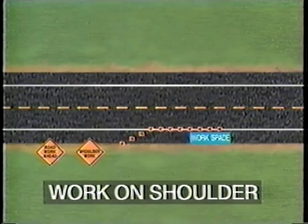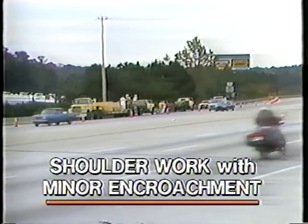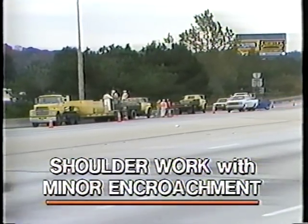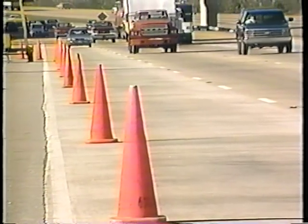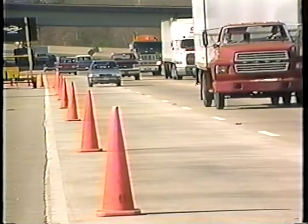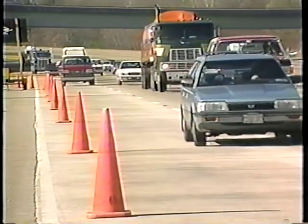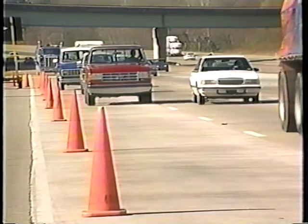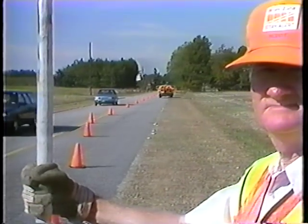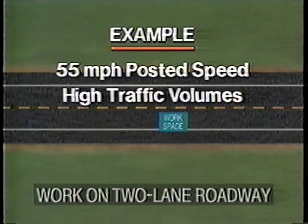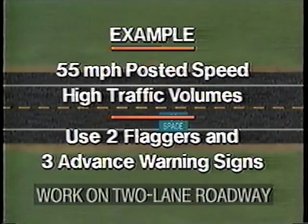A buffer space should be provided in advance of the work space. When work is on the shoulder or takes up part of a lane, traffic volumes, types of traffic (buses, trucks, and cars), speed, and capacity should be analyzed to determine whether the affected lane should be closed. The lane should not be reduced to less than 10 feet. When it is necessary to close one lane of a two-lane, two-way road, the remaining lane must be used by traffic traveling in both directions. For this example — a 55 mph major arterial with high traffic volumes — it is necessary to use two flaggers and install three advance warning signs 500 feet apart.